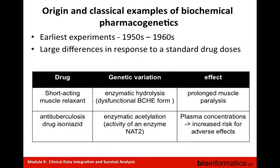The earliest experimentally validated examples of inheritance and drug response were reported in the 1950s and 1960s. Researchers noticed large differences in response to standard doses given to different patients. For example, a short-acting muscle relaxant was observed to be hydrolyzed differently in different subjects, and this variation was inherited. It was later discovered that production of a dysfunctional enzyme — the BCHE enzyme — was responsible for differential response, putting patients at significantly different risk of prolonged muscle paralysis, an almost life-threatening side effect.